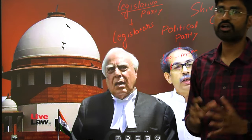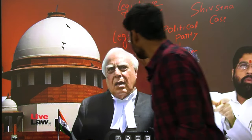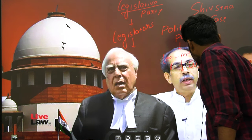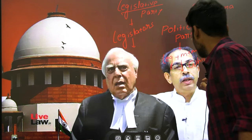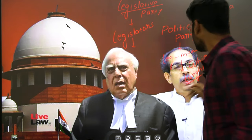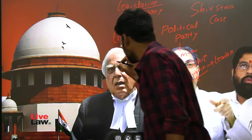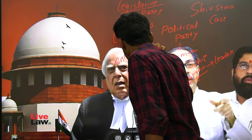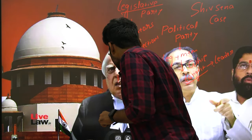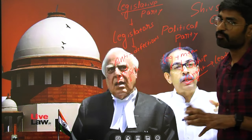The political party is a broader term while the legislative party is a narrower term. If you want to appoint a whip, it is the political party's decision. The largest group chooses the leader. Anti-defection actions can only be taken on the basis of the legislative party, as per the 10th Schedule. The 10th Schedule defines the legislative party but does not define the political party.